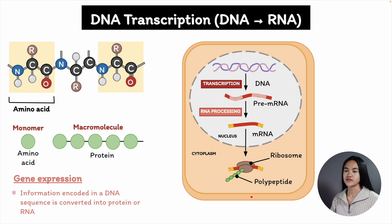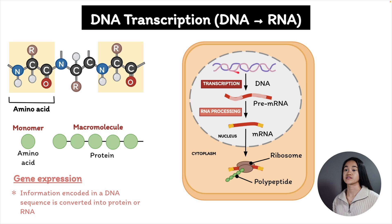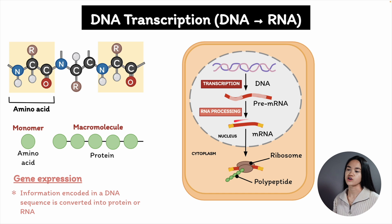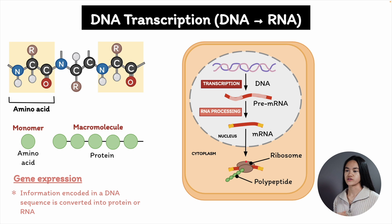Here's our cell and the nucleus. We start with DNA in the nucleus. DNA transcription takes place in the nucleus, and we produce pre-mRNA. This pre-mRNA will then undergo RNA processing to become a fully functional mRNA, and then it gets exported to the cytosol where translation occurs.